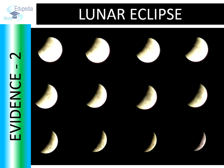Second evidence is observed during a lunar eclipse. A lunar eclipse occurs when the Earth comes between the Sun and the Moon, causing the Moon to enter the Earth's shadow. The important point to be noted here is the shape of the Earth's shadow as it sweeps over the Moon's surface. It is circular, exactly as one would expect if the Earth was spherical.